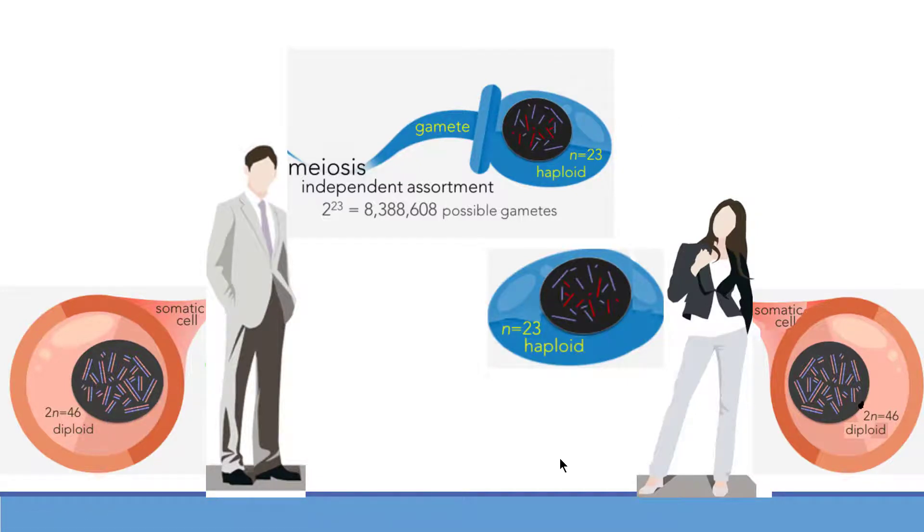Now the sperm and egg contribute the same number of chromosomes during fertilization. The chromosomes present in these gametes can assort independently while making gametes.